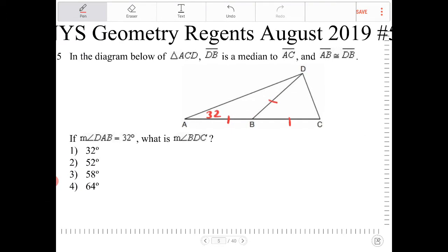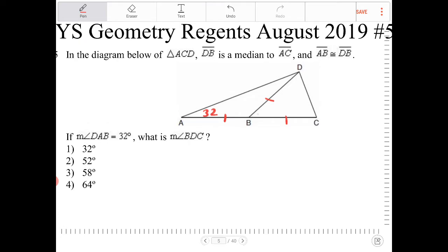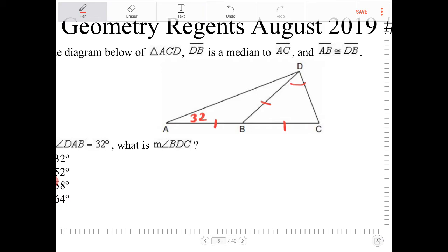what is angle BDC, this angle over here? Understand that ABD is an isosceles triangle, so therefore this angle is also 32 degrees.